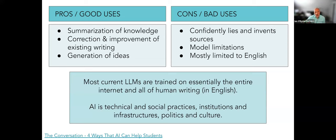Another pro: correction and improvement of existing writing. One of the things I learned writing for The Conversation is that I have a lot of jargon in my writing and it was a challenge to remove that. These LLMs are also fantastic at generating new ideas — they provide opportunities to think more deeply and expand where this might head. Some of the issues: these LLMs will hallucinate. They are trying to predict what the next word or sentence is going to be, and they will lie and invent sources.